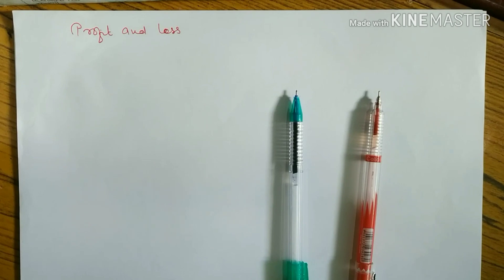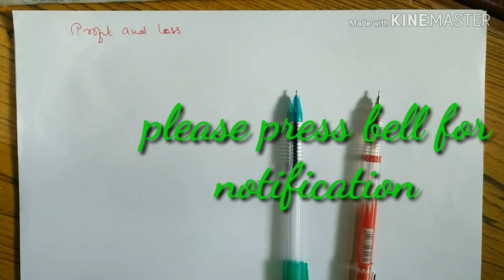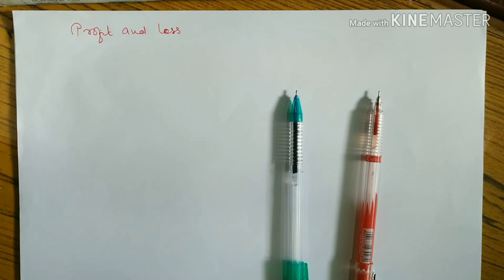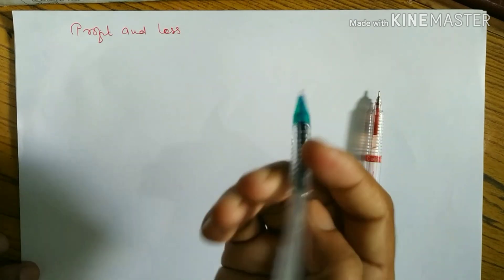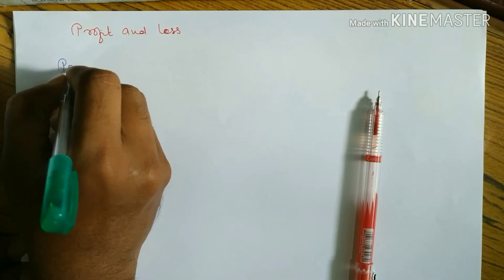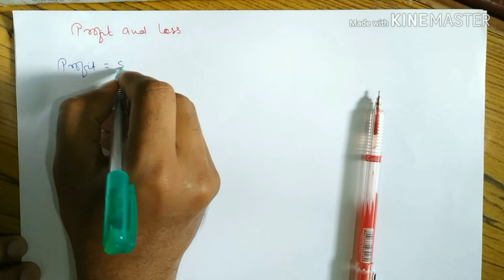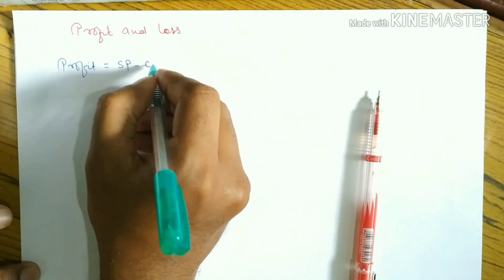Today I'm going to teach you profit and loss — what is profit and what is loss. Profit is made when the selling price of an item is more than the cost price. Loss is made when the selling price of an item is less than the cost price, i.e., the cost price is greater than the selling price.